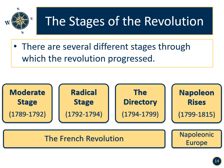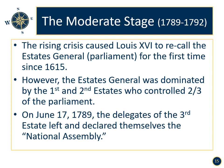The moderate stage, 1789 to 1792. The rising crisis caused Louis XVI to recall the Estates General, also known as the French Parliament, for the first time since 1615. However, the Estates General was dominated by the First and Second Estates who controlled two-thirds of the Parliament. The votes from the Third Estate never mattered. The recalling of the Estates General was purely symbolic by Louis XVI and only served to further anger the Third Estate. On June 17, 1789, the delegates of the Third Estate left and declared themselves to be the National Assembly. Members of the National Assembly declared that they would not disband until the King met their demands — this became known as the Tennis Court Oath.